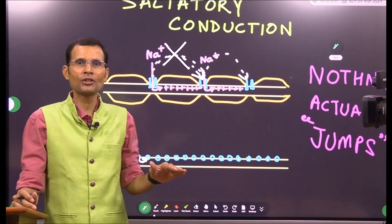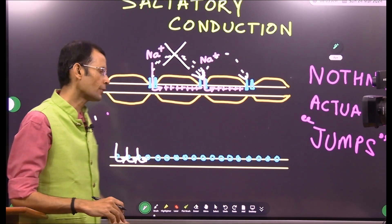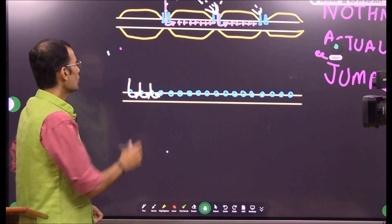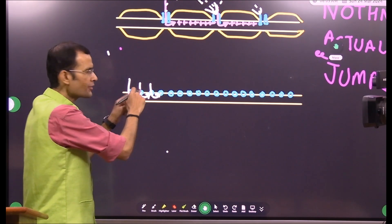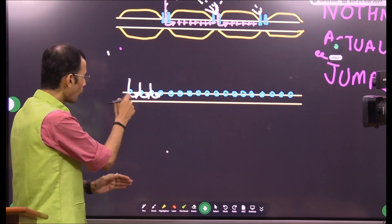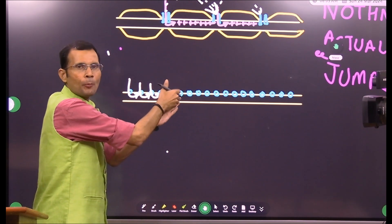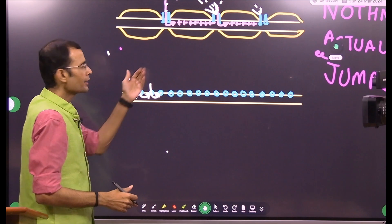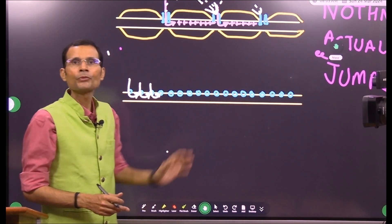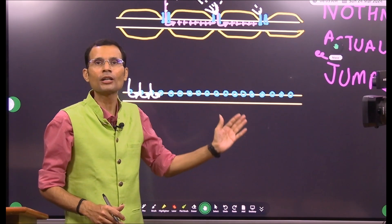Let's understand how impulse propagation occurs first in the unmyelinated nerve fiber, then compare with saltatory conduction. In the unmyelinated nerve fiber, sodium channels are located at every next point. Sodium comes in from one point and those positive charges travel to the adjacent point. That adjacent point reaches threshold, sodium channels open, sodium comes in and flows to the third point, which then generates an action potential. This is how each next point depolarizes — this is called the flow of local currents or local circuit.